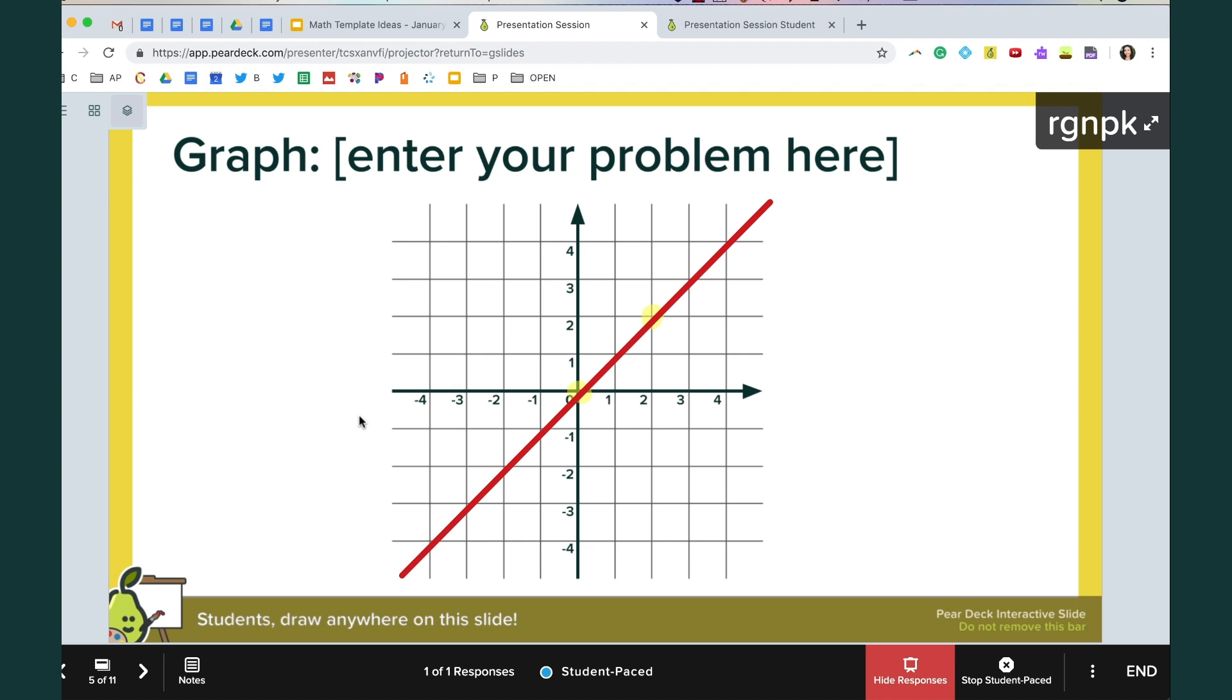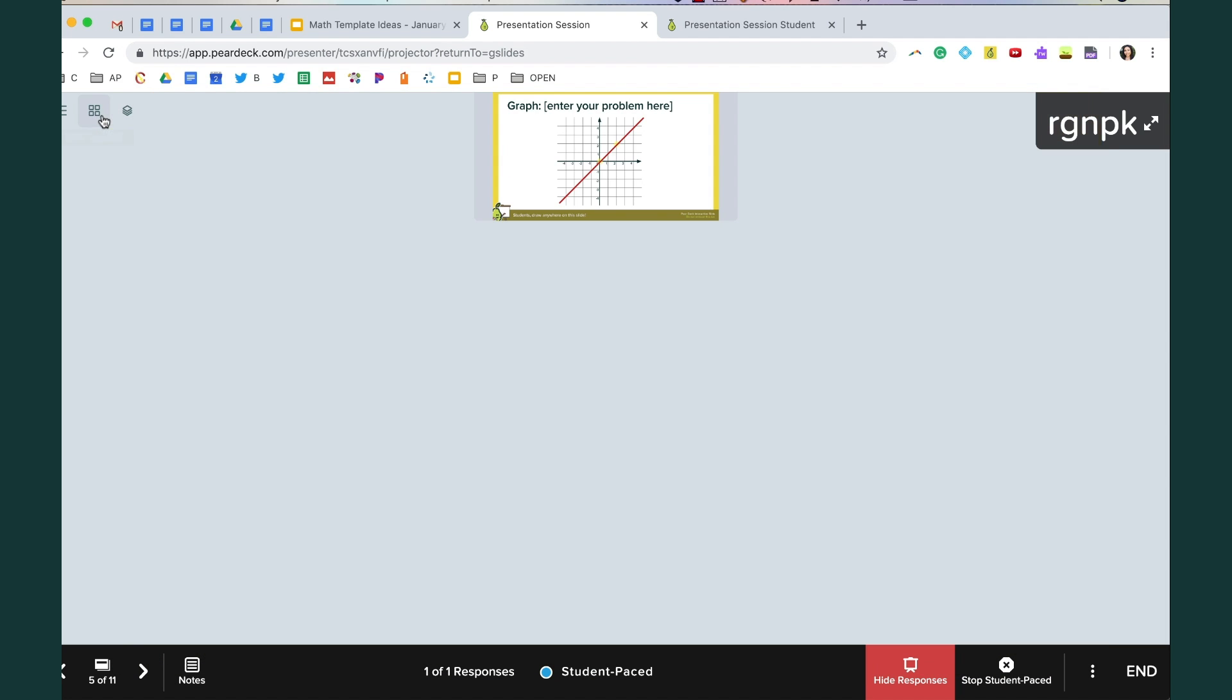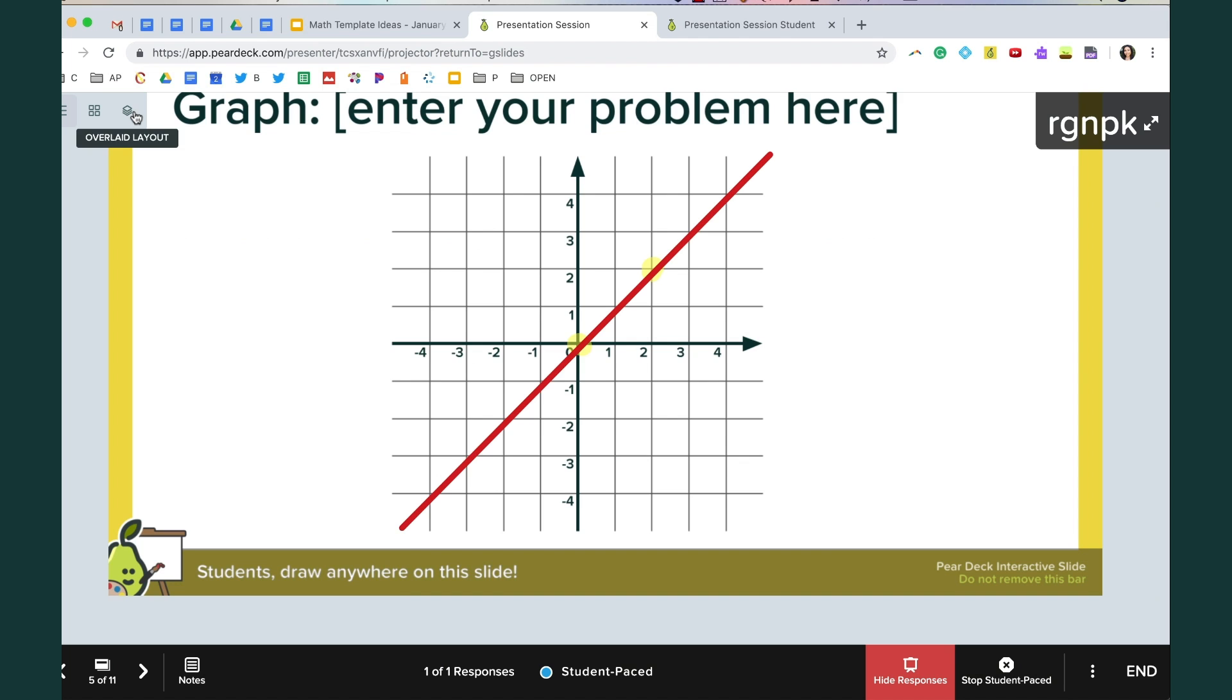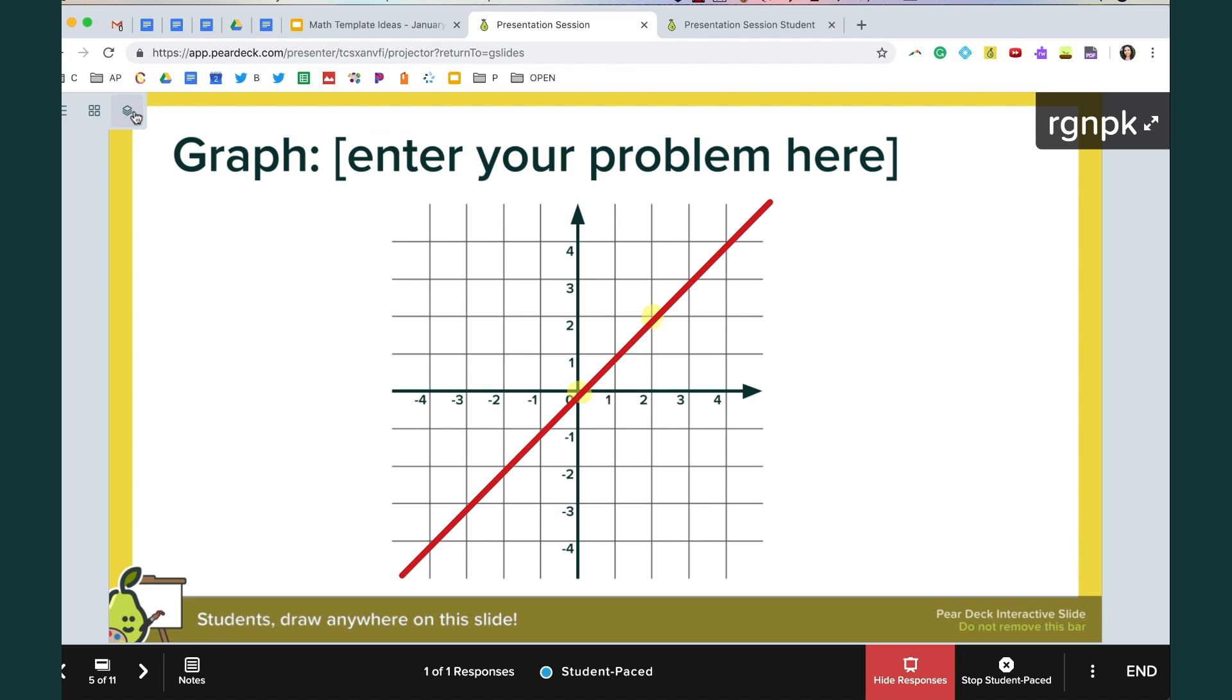So that overlaid layout is wonderful for graphing type questions. The other types of layouts are grid layouts so you can see each different student's response and list layout is just one at a time you would kind of scroll through. But for the graphing problems to see if there's consensus it's really powerful to just use this overlaid layout.